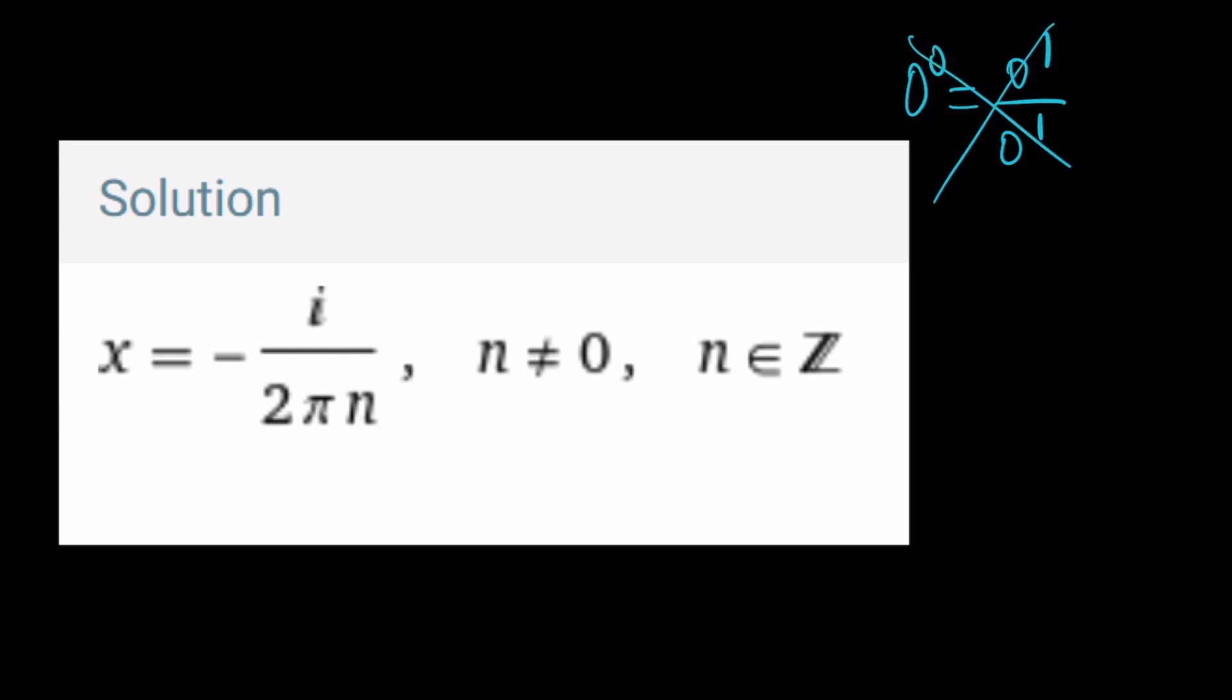Come on. Check out Desmos. It says it's 1. So, I would trust Desmos on that one. And on so many other things. But anyways, that's the solution. N is an integer.